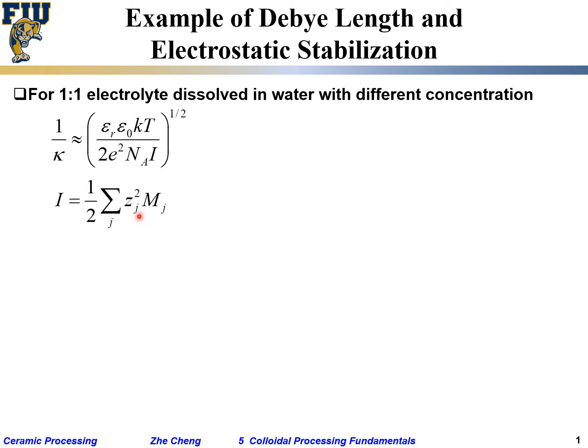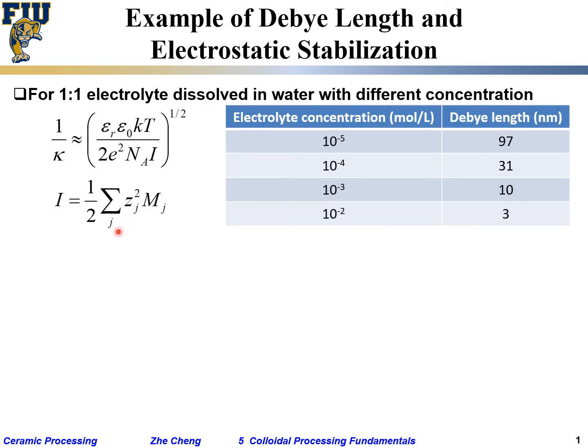z is the charge on individual ions, M is the concentration for individual ions, and we do a summation of all the ions, positive and negative, add them together. We see depending on the electrolyte at different concentrations, we're going to have different results.